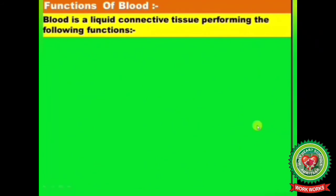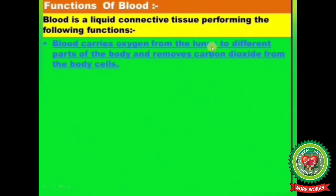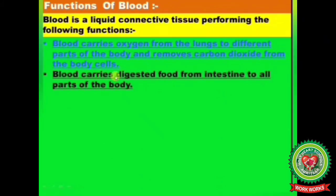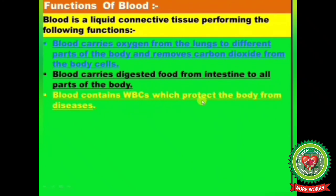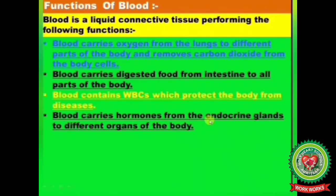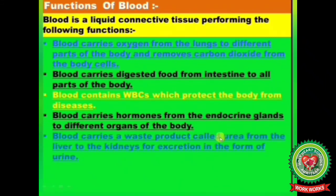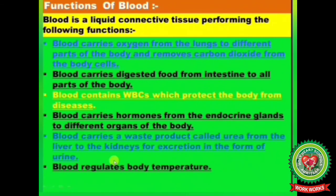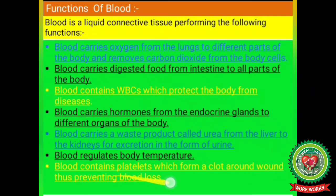Functions of blood: Blood is a liquid connective tissue performing the following functions. It carries oxygen from the lungs to different parts of the body and removes carbon dioxide from the body cells. It carries digested food from the intestine to all parts of the body. It contains WBCs which protect the body from diseases. It carries hormones from the endocrine glands to different organs. It carries the waste product urea from the liver to the kidneys for excretion as urine. It regulates body temperature, and it contains platelets which form a clot around wounds, preventing blood loss.